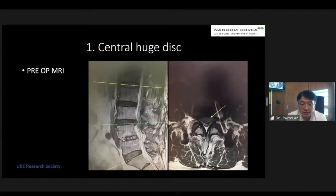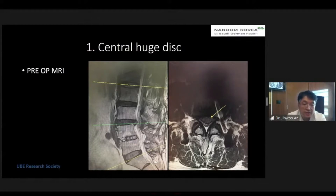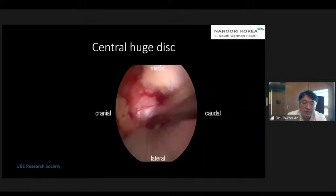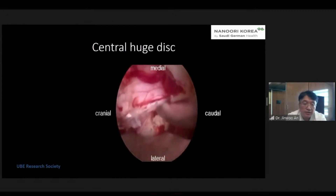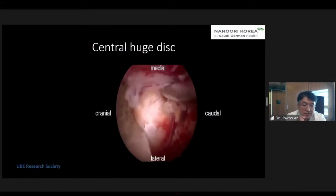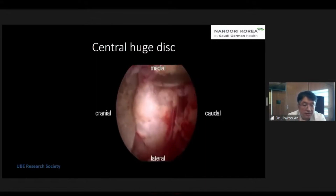The first case is central herniated disc combined with fusion. The MRI shows the L3-4 level ruptured disc compressing the whole dural sac massively in the axial view. This patient had L4-5 fusion surgery before. So in this case there is some adhesion because of the previous surgery. The targeting point is very important. For all cases in spine surgery for disc removal, targeting is very important. The approach is the ipsilateral lateral view to L3-4 levels using a fan retractor — I prefer to use this self-retractor instrument, which is very useful without any assistance.